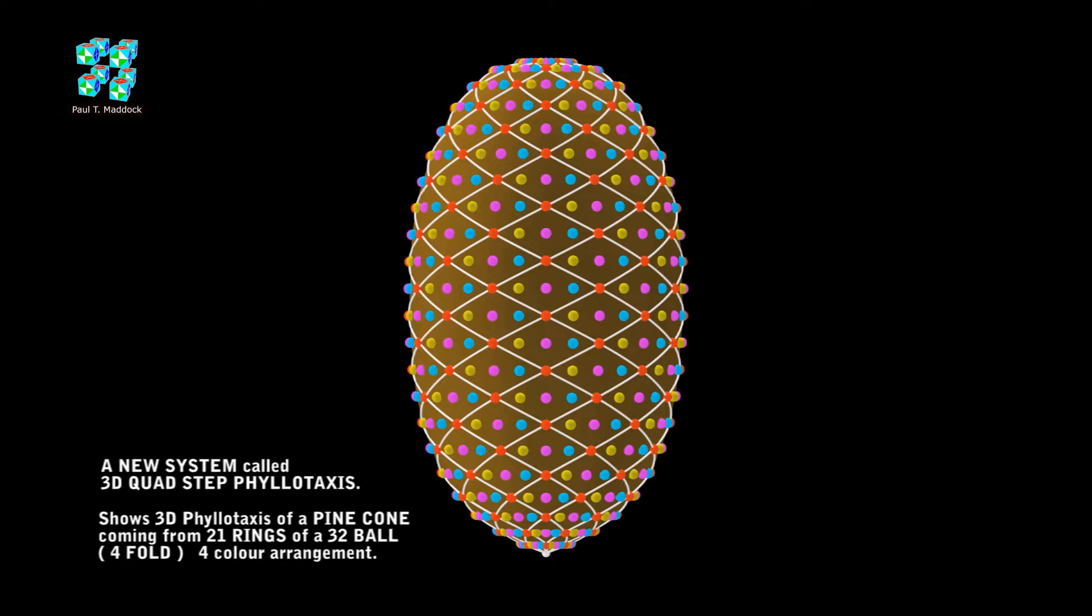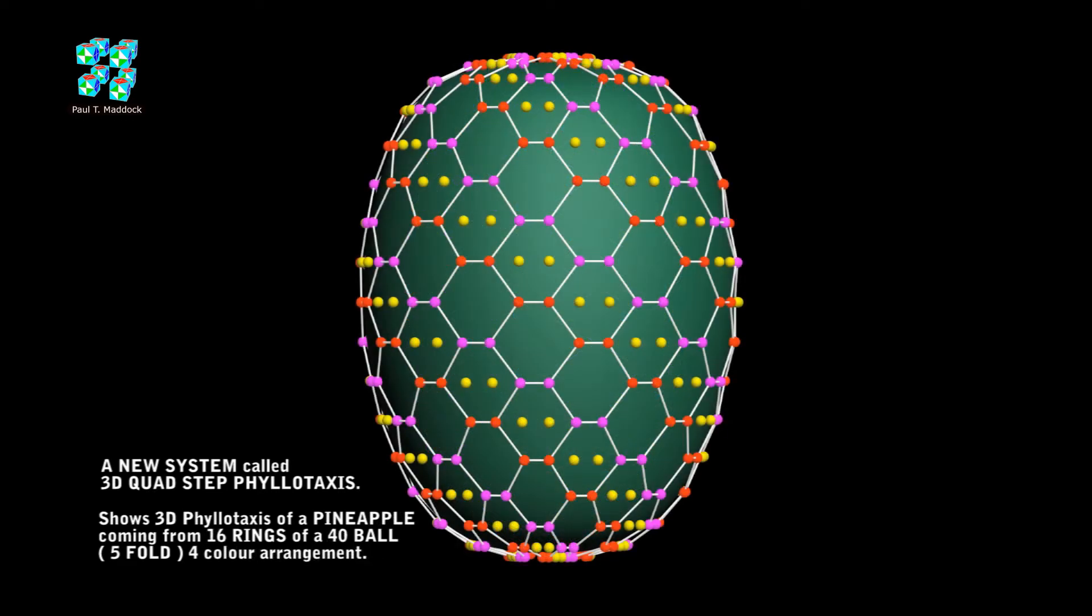What happens when we use a 40 point ring? Then it will go around five times. Now this five times geometry is used for the pineapple.